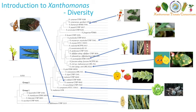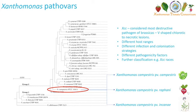There are subspecies pathovars which are also very important, and they can be very different both genomically and biologically. To take Xanthomonas campestris as an example, initially it was thought to have hundreds of pathovars.